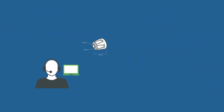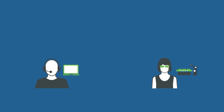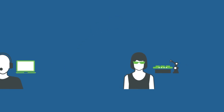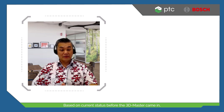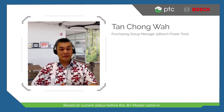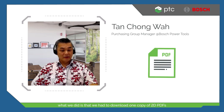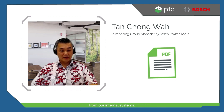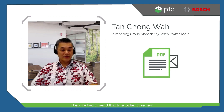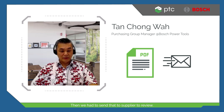After the plastic housing has been designed, the drawing goes to the technical buyer and is then sent to the supplier for production. Based on the current status before the 3D Master, we have to download a copy of the 2D PDF from our internal systems and send it to the supplier to review.